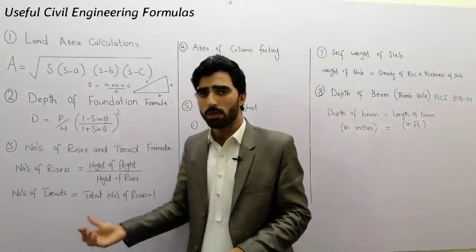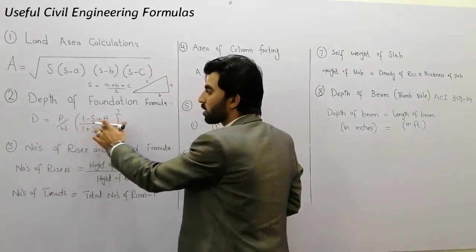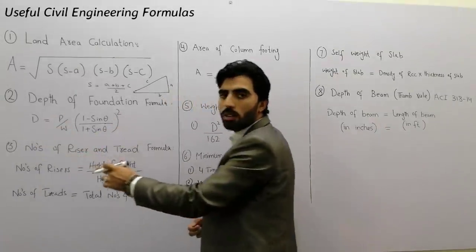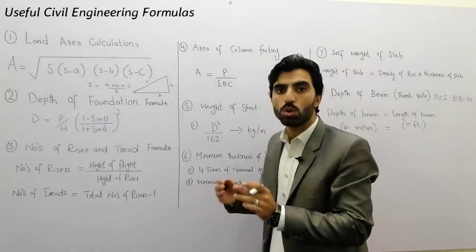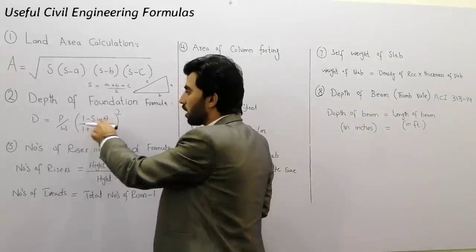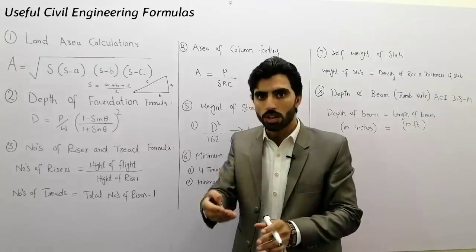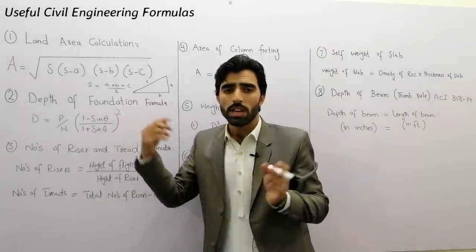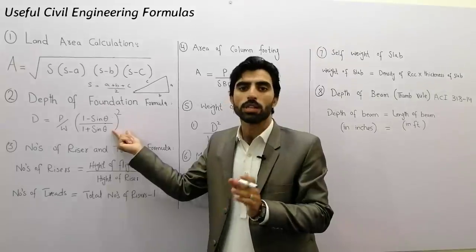The second formula is how to find depth of foundation. The formula is: D is equal to P divided by W, multiplied by (1 minus sin theta) divided by (1 plus sin theta), whole squared. D is the depth of foundation, P is the load of the structure or building, and W is the density of soil in which you are making excavation for your foundation. Theta is the angle of repose for soil. For more details, the link is in the description.